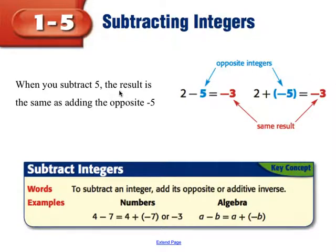When we subtract 5 from a number, here's an example, 2 minus 5, the result is the same as adding the opposite of negative 5. So subtraction is actually defined in terms of addition. It's just adding the opposite number.